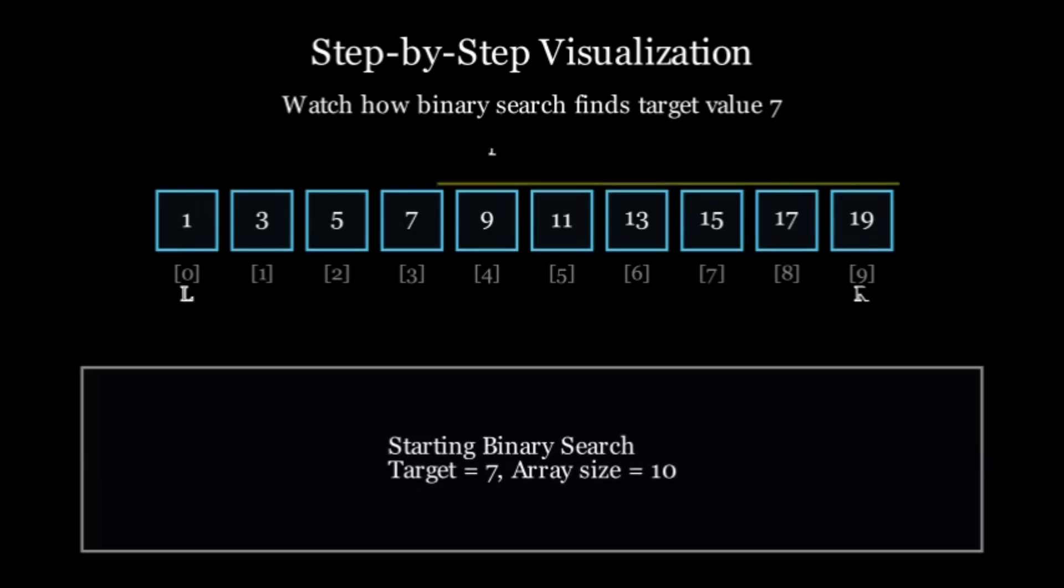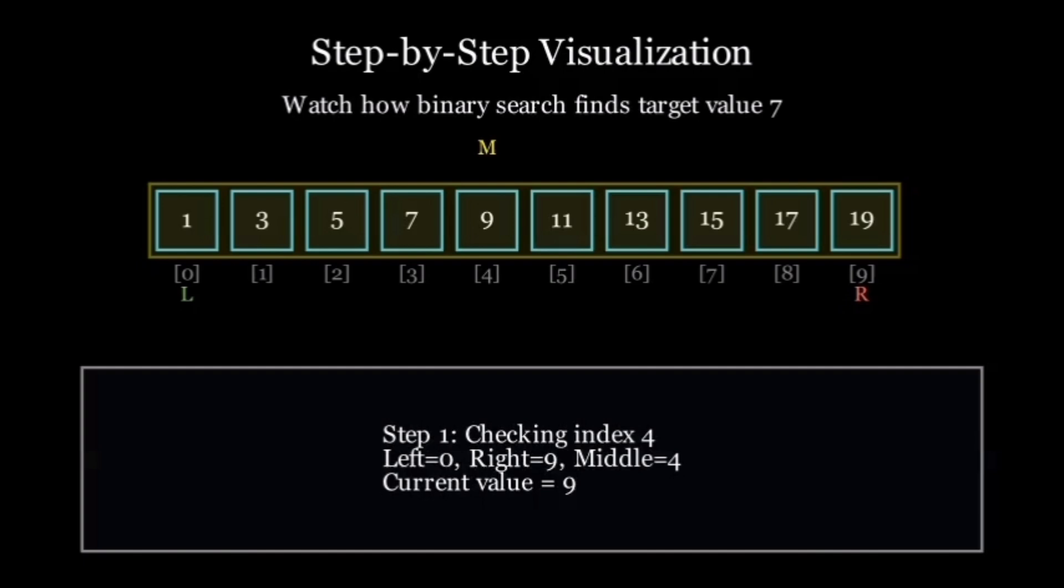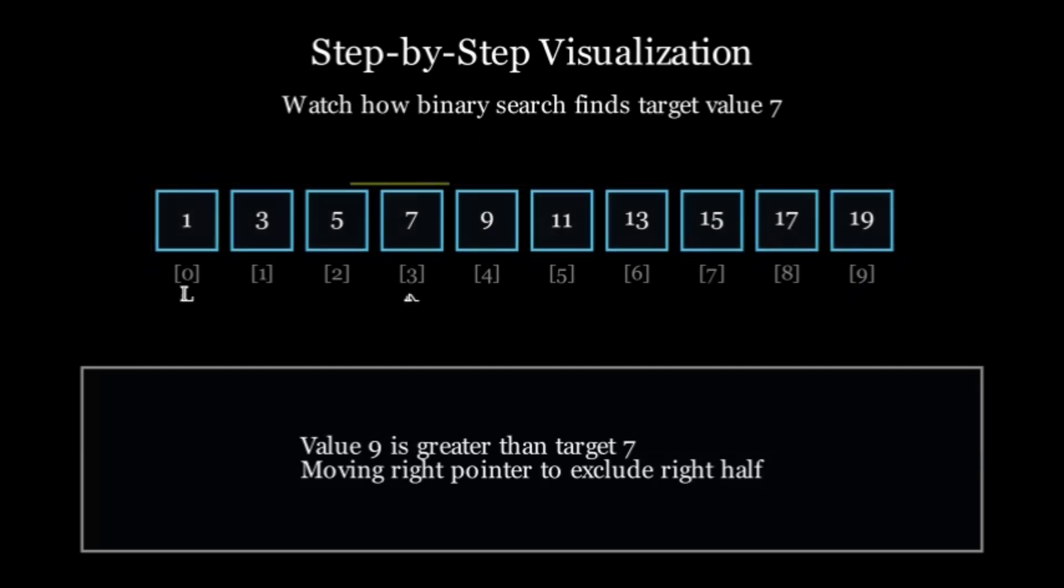We start with two pointers, L at index 0 and R at index 9. Moving on to step 1, we calculate the middle index. That is (0 + 9) // 2 = 4. The value at index 4 is 9. We check the condition, is 9 equal to 7? No. Is 9 less than 7? No. So we move the right pointer to mid - 1, that is 3.